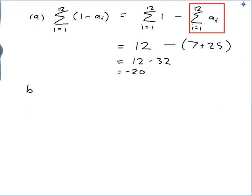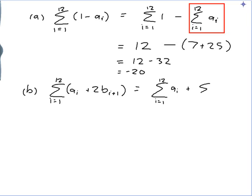Now let's do part b. The sum from i equals 1 to 12 of ai plus 2bi plus 1. All right, well let's do what we did before and split it up into pieces. I've got the sum from i equals 1 to 12 of ai plus the sum from i equals 1 to 12 of 2bi plus 1.